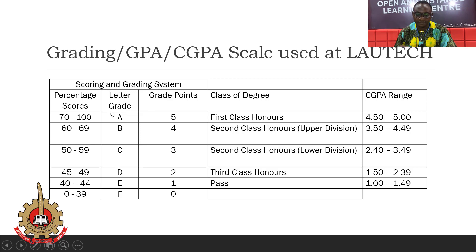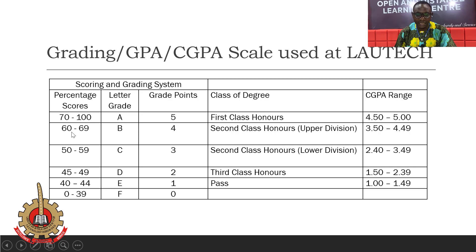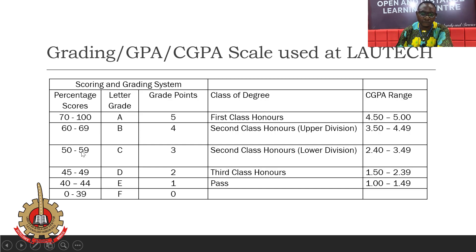After your exams, your scores are scaled from 0 to 100. If you score between 70 and 100, you get an A. If you score between 60 and 69, you have a B. Between 50 and 59 is a C. Between 45 and 49 is a D. Between 40 and 44 is an E. And if you score between 0 and 39, that is an F.